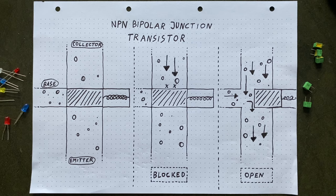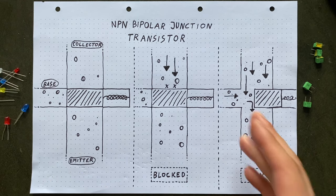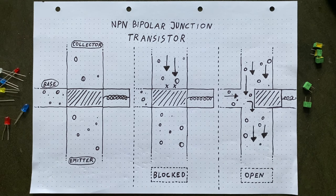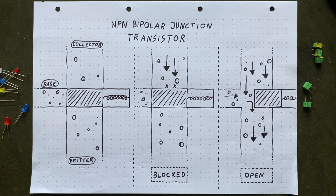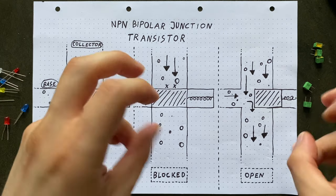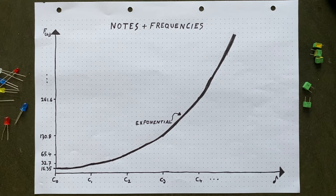Second, a transistor in its linear region is controlled by the amount of current flowing into the base, so it's all about how much water is passing through. That is not what we're looking for. We want to be able to control the pitch using a voltage, so our transistor's openness should be determined by the amount of pressure at the base.